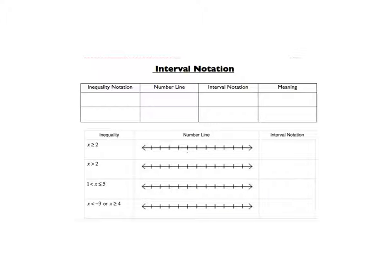Okay, so we're going to plot our numbers on the number line. I'm going to do a closed circle on 2. X is greater than or equal to, so we're going to shade to the right.